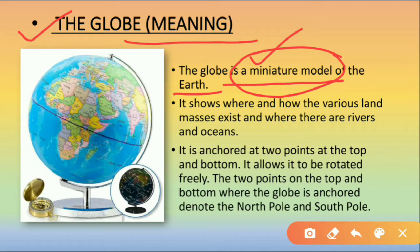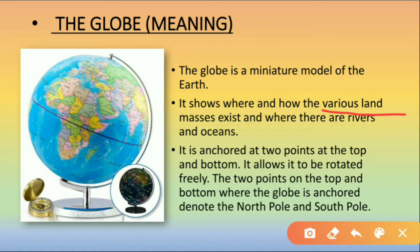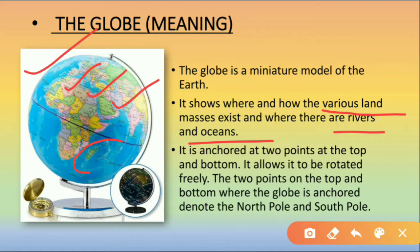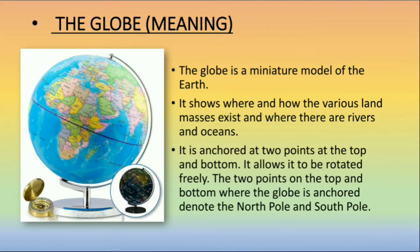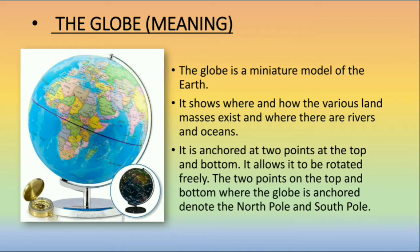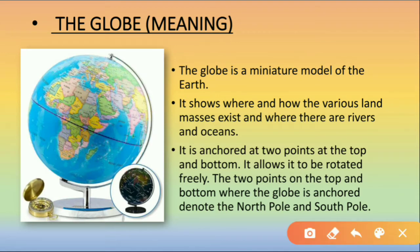The globe shows where and how the various land masses exist, and where there are rivers and oceans. When we look at the globe, we can see many areas, countries, land masses, rivers, and oceans. The globe helps us to see where the land masses are. The blue parts are the Indian Ocean and the Pacific Ocean. By seeing the globe we can easily locate the places — where are the land masses, where are the rivers, where are the oceans.